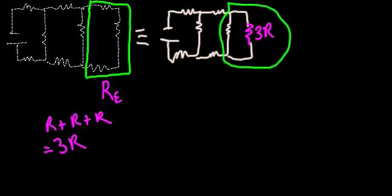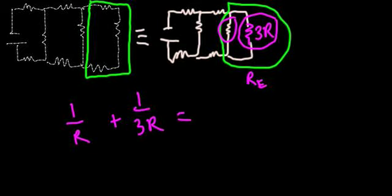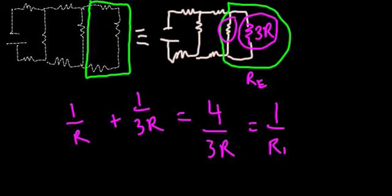We can now replace these two parallel resistors with an equivalent resistor. Again, let's call it Re. And this time we have to use the parallel circuit resistor adding rule. With this we get that one over the equivalent resistance is four over 3R.